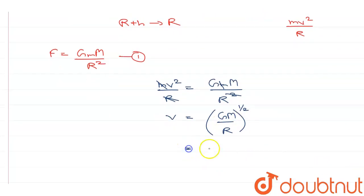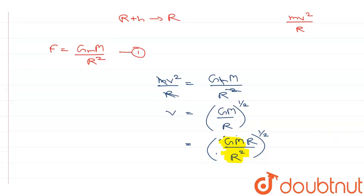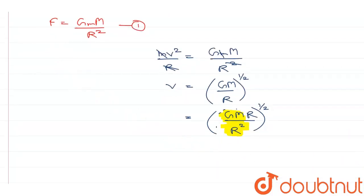Now if I multiply the numerator and denominator with R, I get GM upon R squared to the power 1/2. Now this term GM by R squared is basically the acceleration due to gravity.